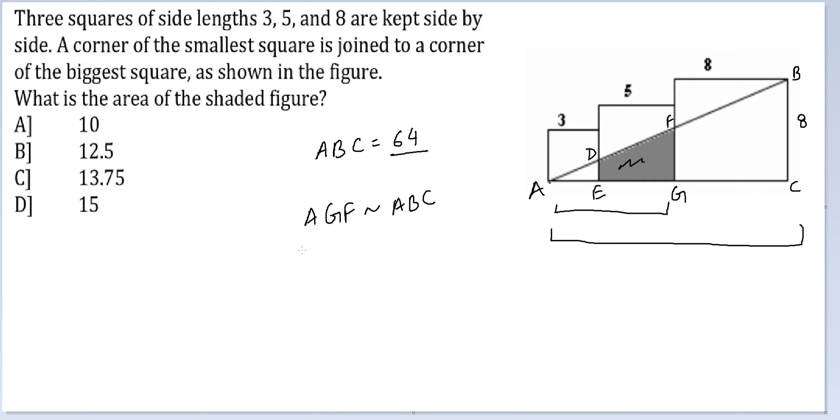So 1 is to 2. So area of AGF will be one-fourth the area of ABC. So area of AGF is how much? Area of AGF is one-fourth of 64, so area of AGF is 16.